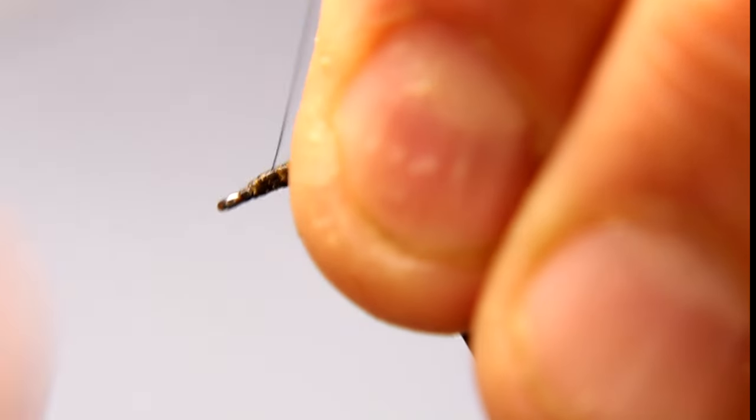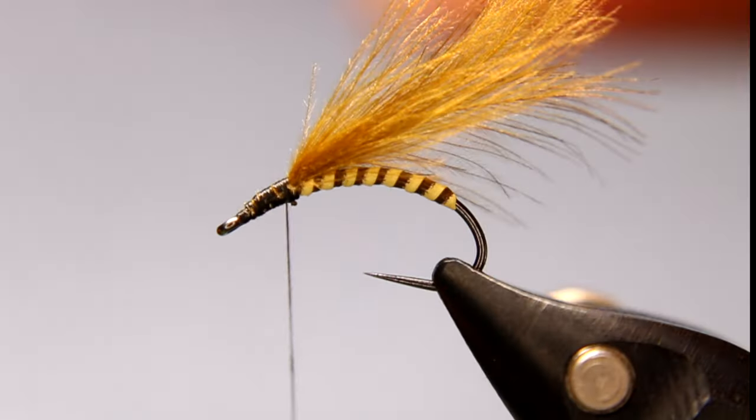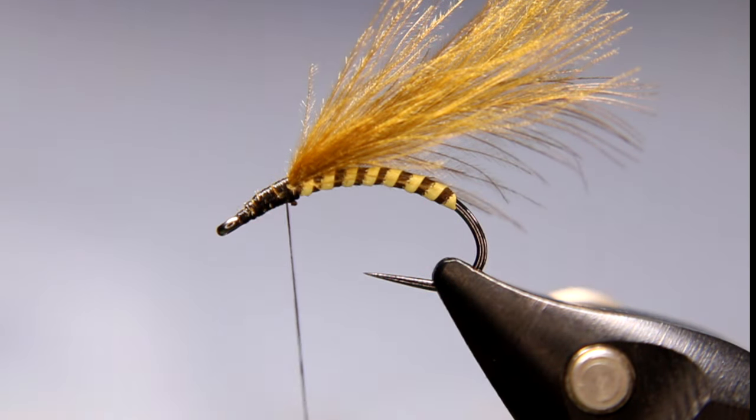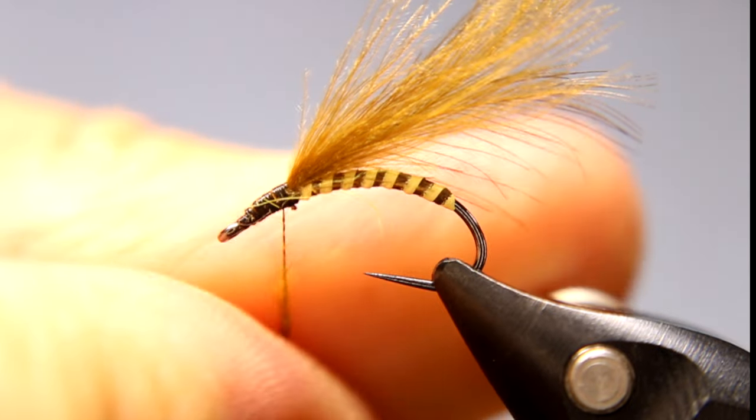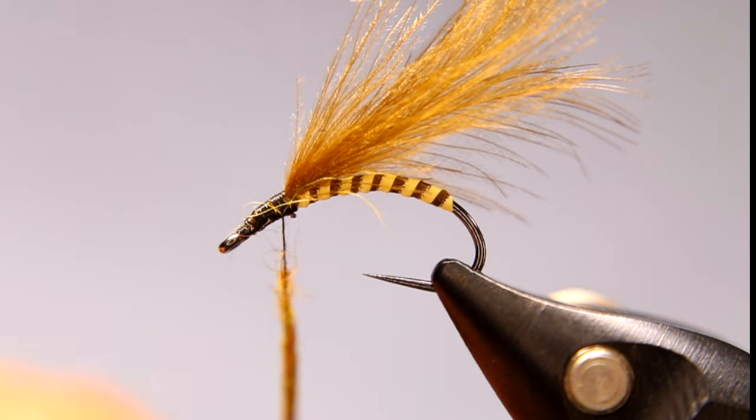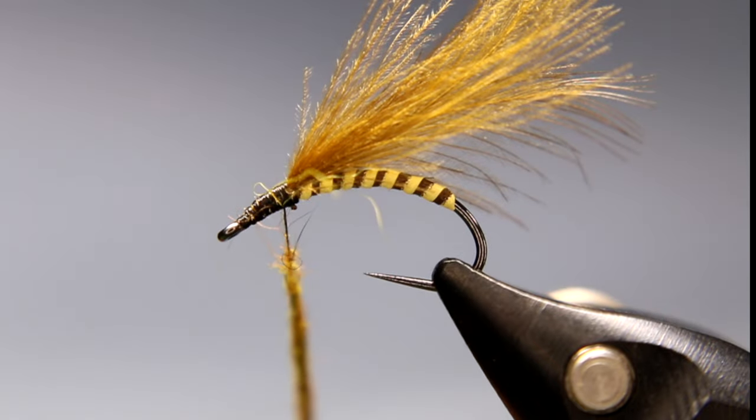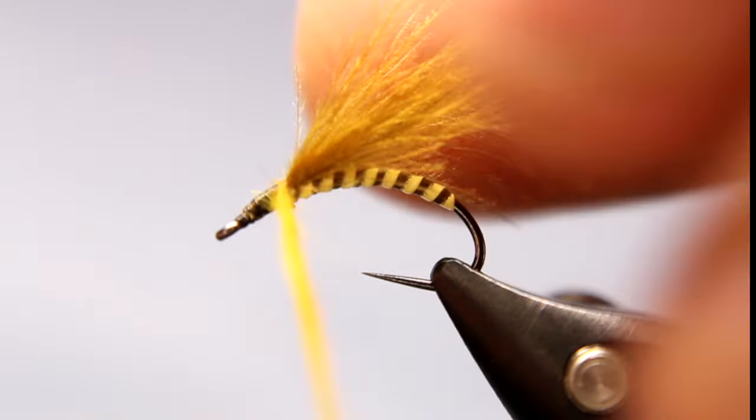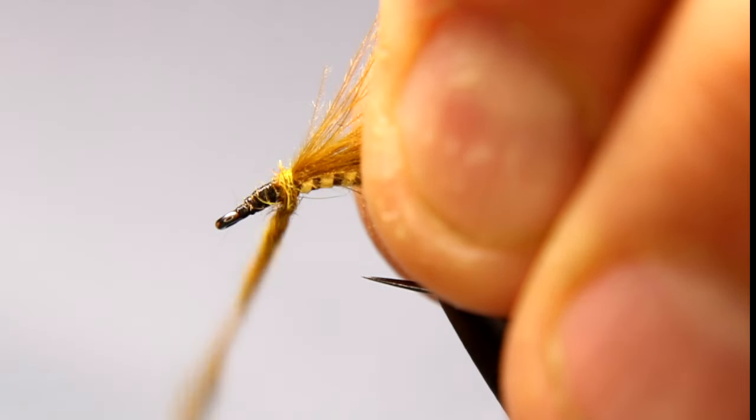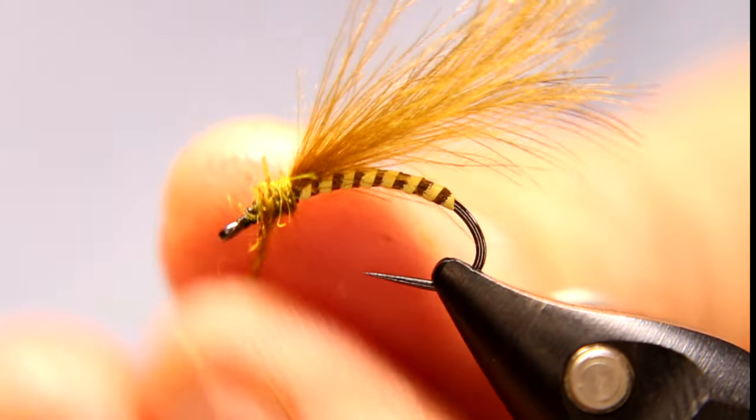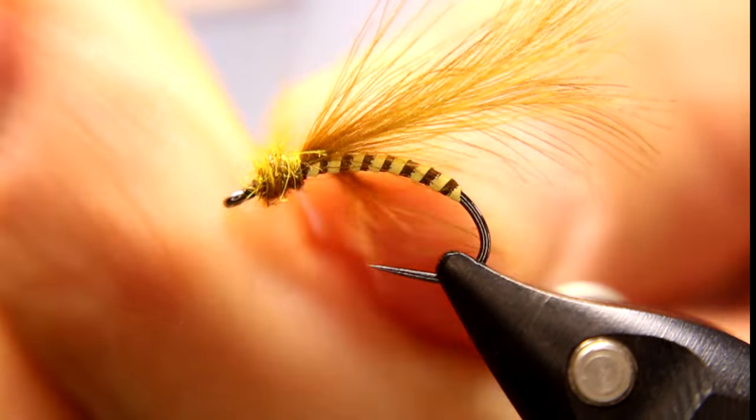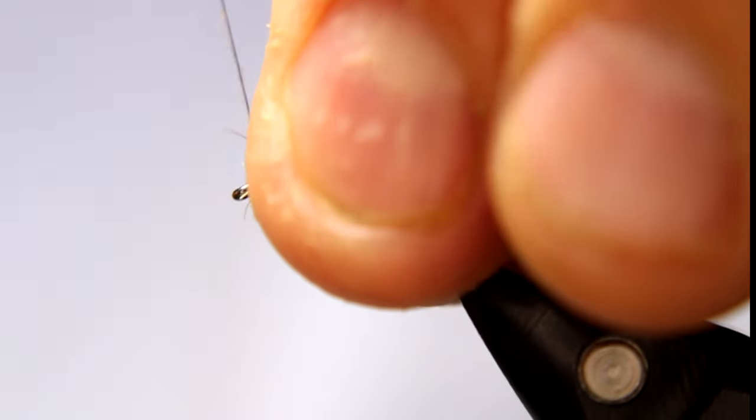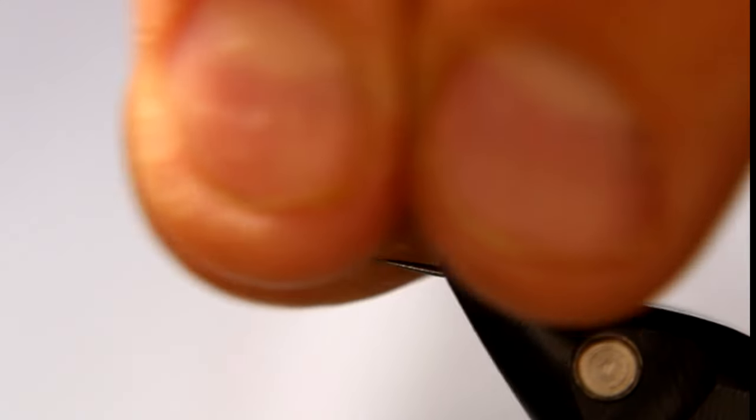Okay, so now I'm going to come back again to where I tied that CDC in. I'm going to take some of that hard dubbing. I really like this hard dubbing. It's a mixture of I think three different materials—I think it's rabbit, squirrel, and hamster. I like it because it dubs easy, it's spiky, and gives you that really nice spiky look that you want for these emergers and other flies.